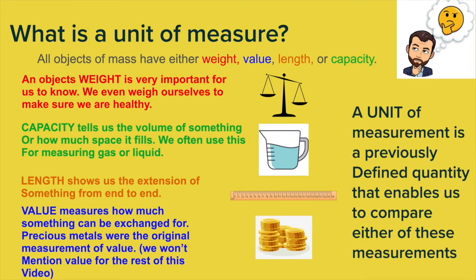A unit of measurement is a previously defined quantity. Let me take, for example, a gram. Hopefully you know what a gram is. What is a gram? Well, we can't really put it into context because a gram is a gram. It's a previously accepted quantity of something. And that is what a unit is. For example, a centimeter. That's been previously defined. So everybody knows a centimeter is a centimeter. Those previously defined quantities enable us to compare either of these measurements. Let's move on.